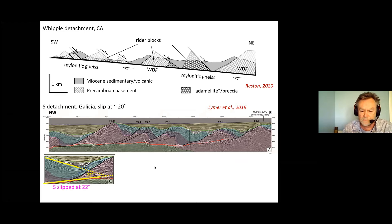And at the bottom we see the S detachment which is at the Iberia rifted margin west of Spain where we can see a fault which is currently low angle which has a series of fault blocks on top of it which may well have been rafted up with it. We can look at the angle of slip of the S detachment by looking at the relationships between the center of sediments and work out that S must have slipped at about 22 degrees, so a genuine low angle normal fault.